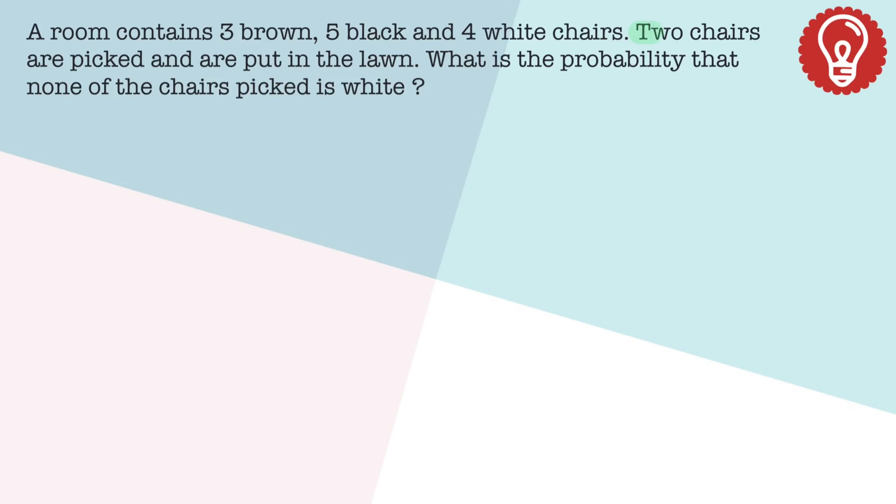And this time, we are picking two chairs. And we don't want those chairs to be white. Because there are three, five, and four, that's 12 chairs altogether. And out of these 12, we need to select two. So 12C2 is the sample space.